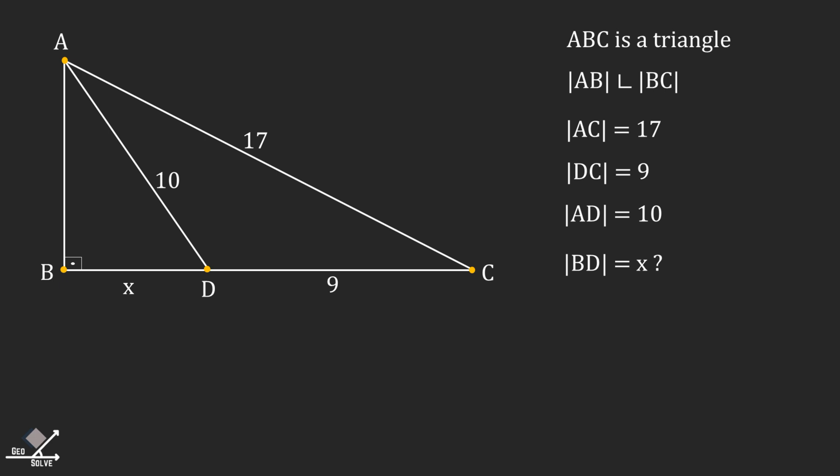Hey, welcome to GeoSolve. Today we have a right angle triangle question for you. Let's go over the given information. ABC is a triangle, line AB is perpendicular to line BC.